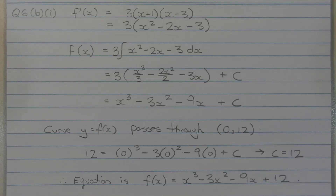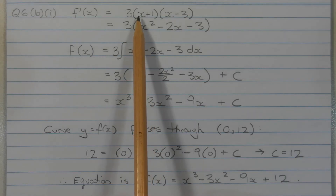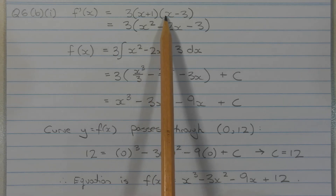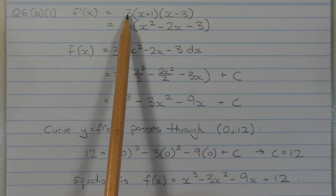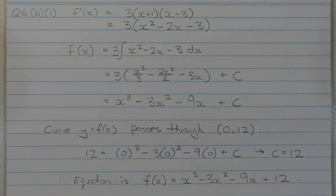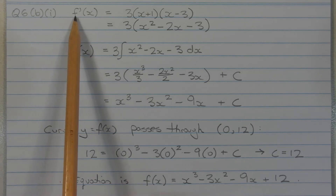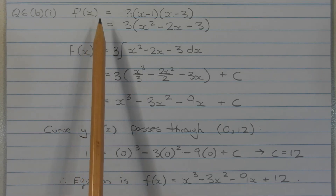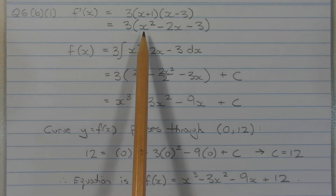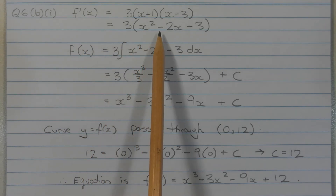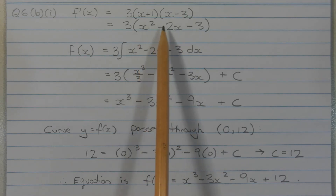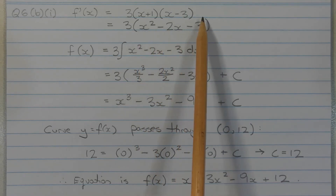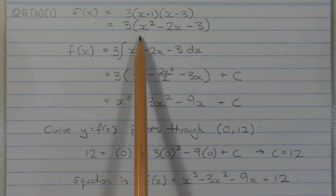The first step is to expand (x plus 1) times (x minus 3), leaving the multiplying constant 3 on the outside. So we get f'(x) is equal to 3 times (x squared minus 2x minus 3).